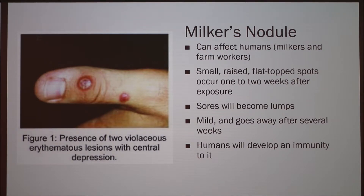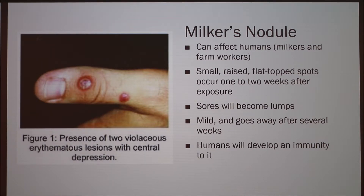When humans are infected, it is known as milker's nodule. Milkers and farm workers will be the most likely to get infected. In very rare cases, a slaughterhouse employee or a vet could also be infected. In humans, the virus creates small raised flat-topped spots that will begin to appear one or two weeks after exposure to an infected cow.